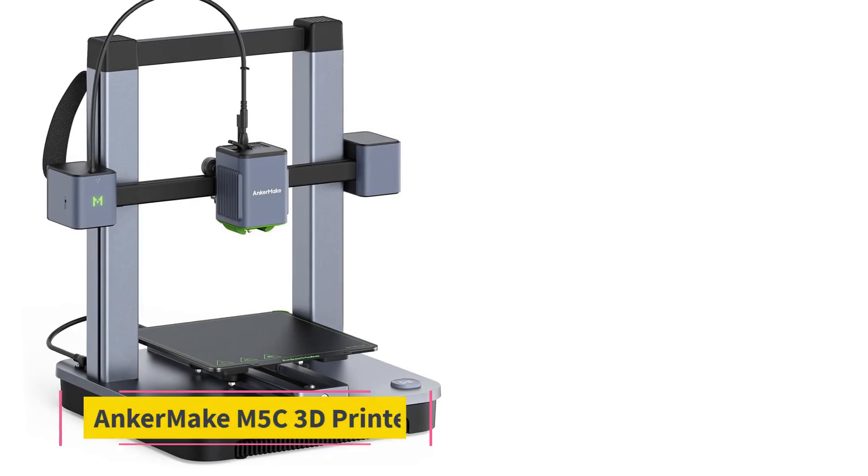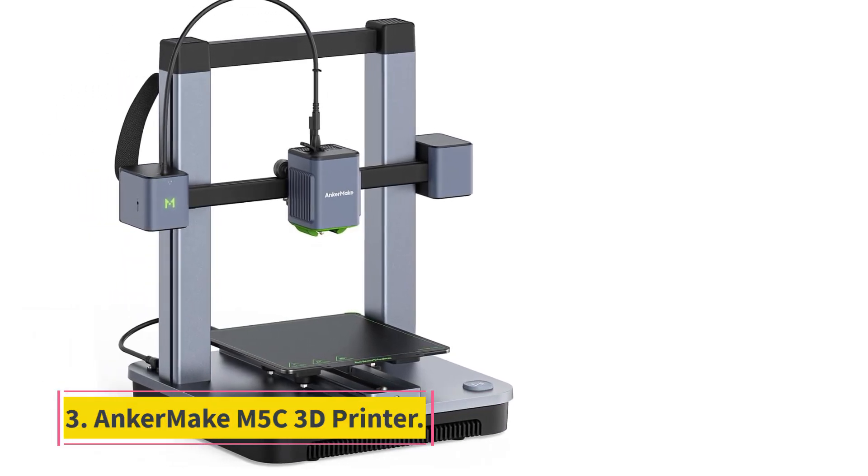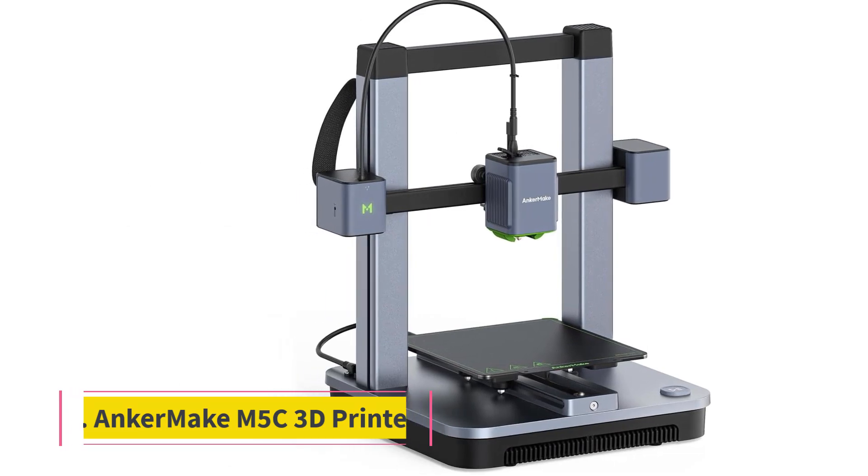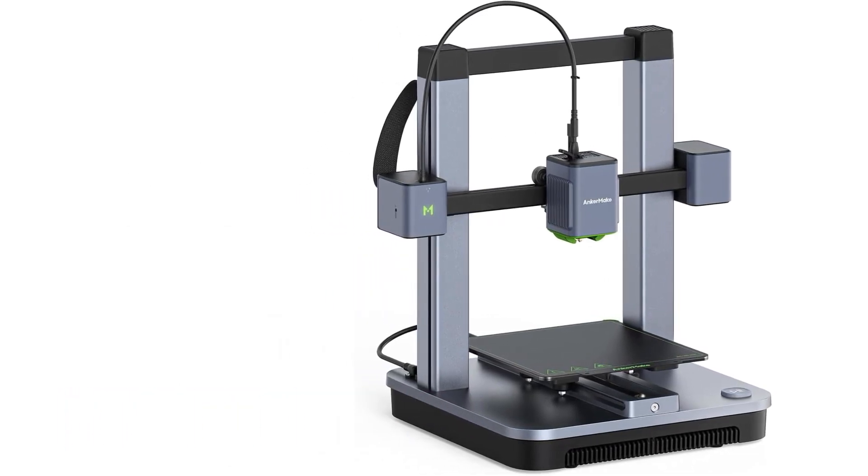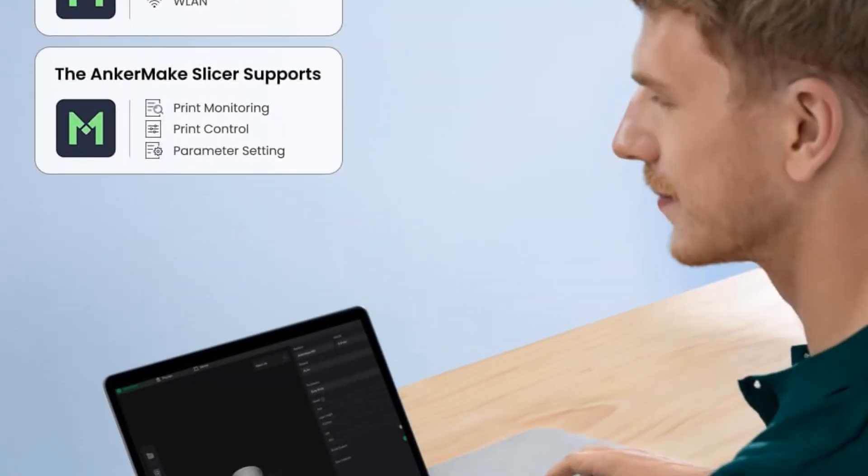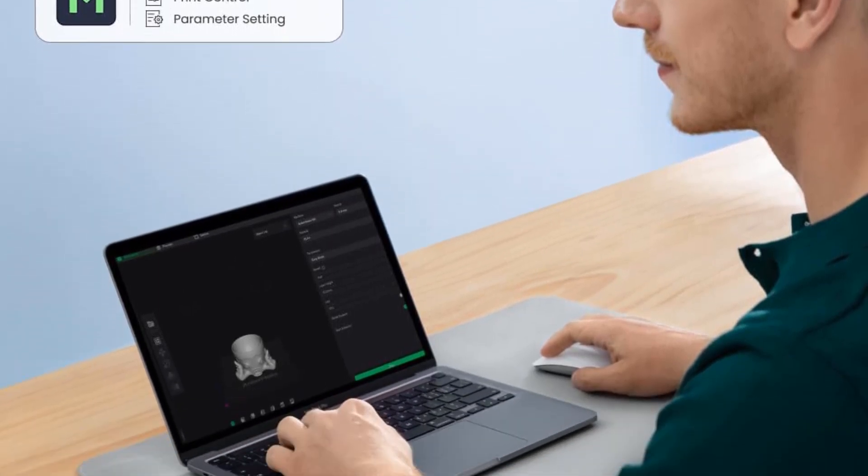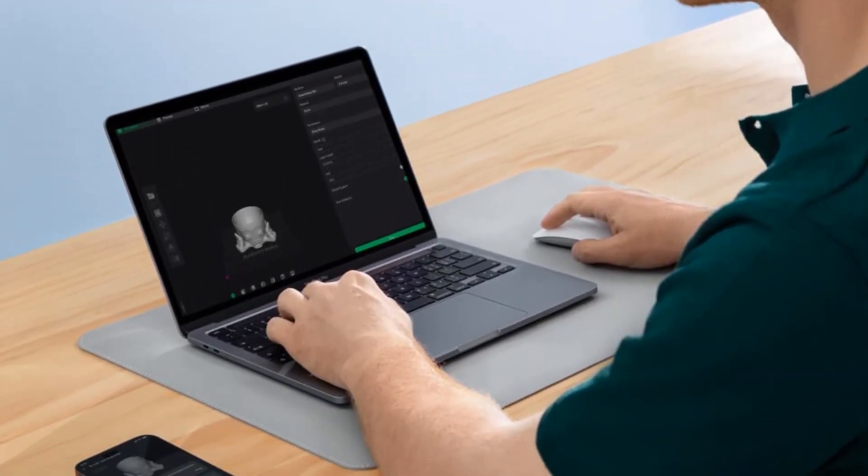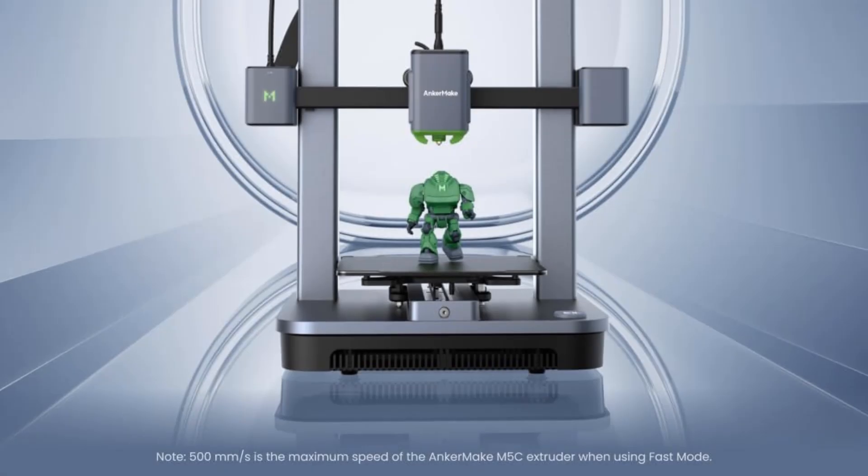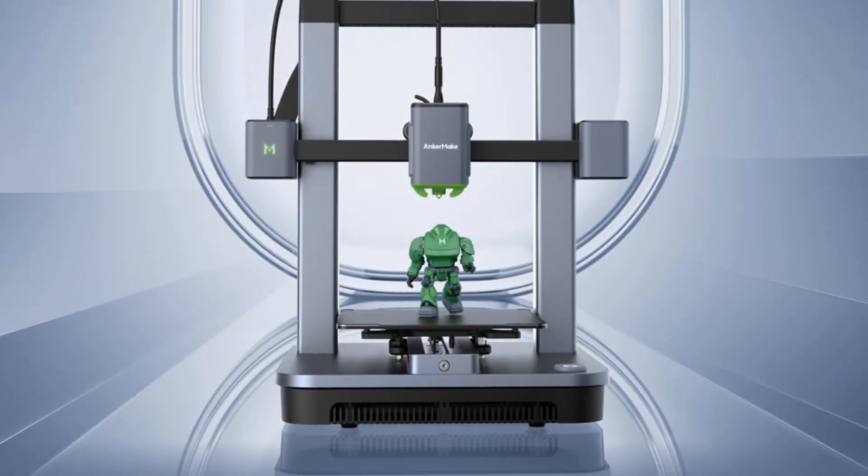Number 3: AnkerMake M5C 3D Printer. The AnkerMake M5C Open Frame 3D Printer is easy to assemble and to use. It has a generous print area for its price, and the prints we produced were of high quality, even with the default settings in the slicer software.